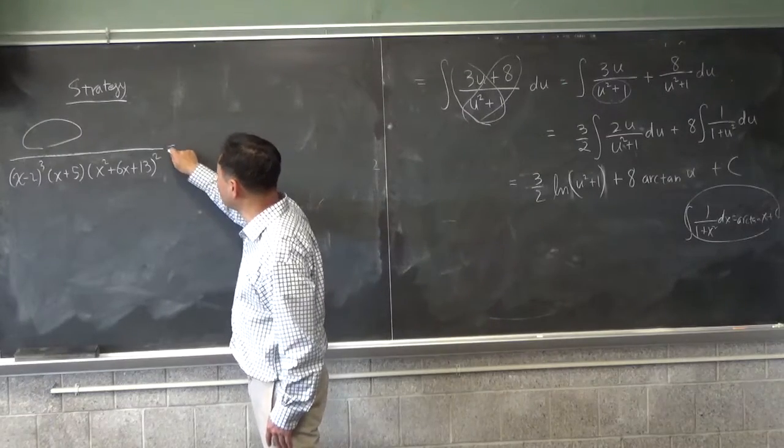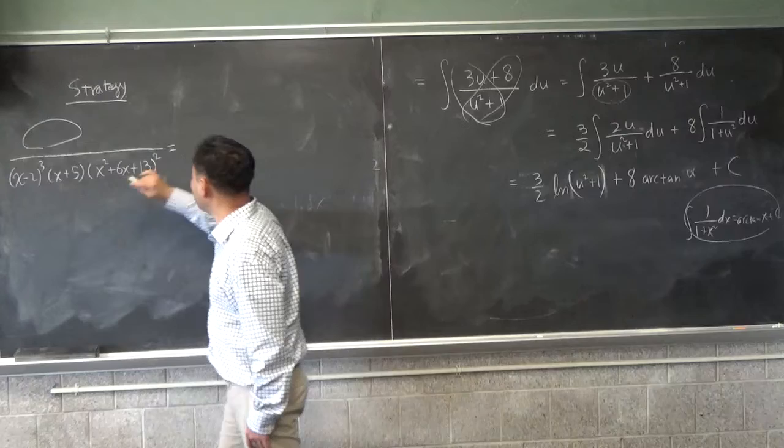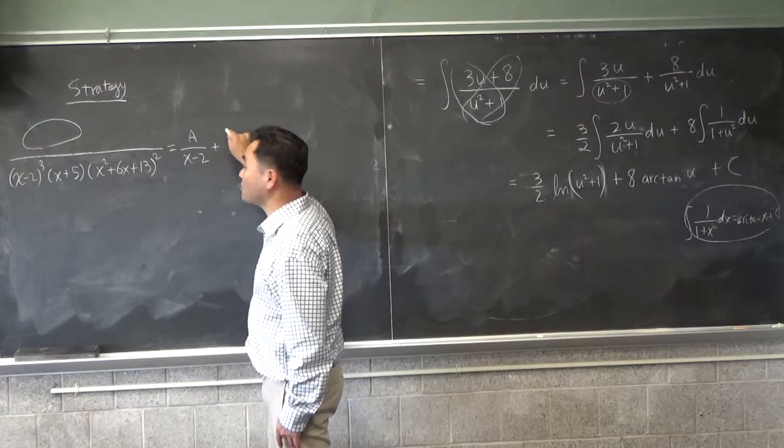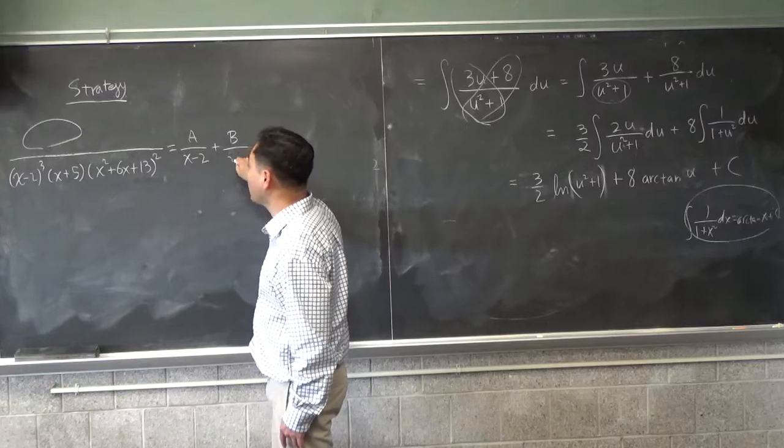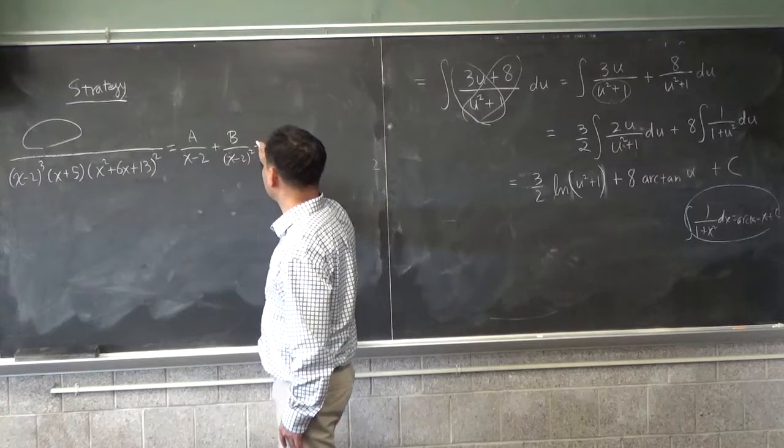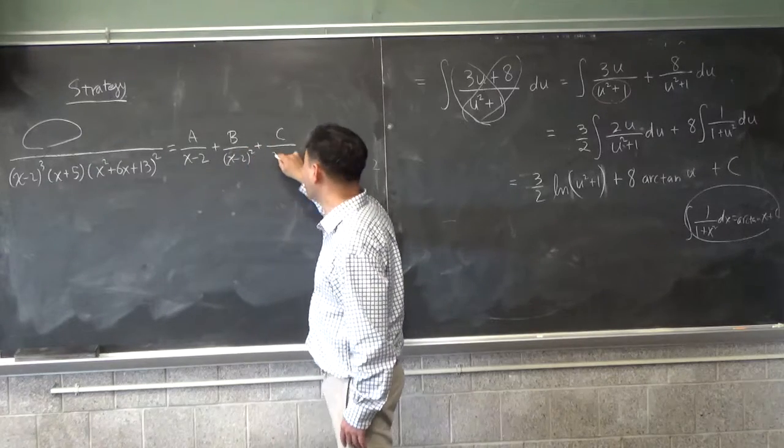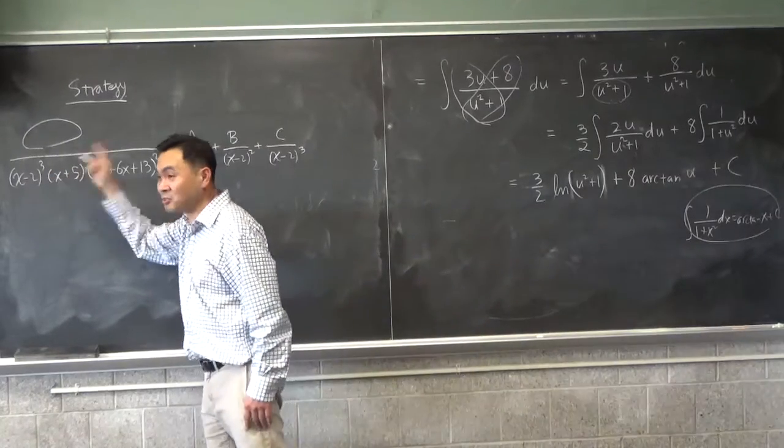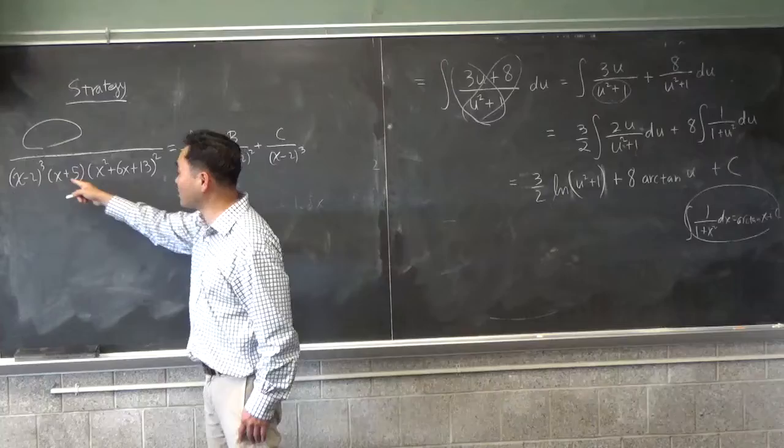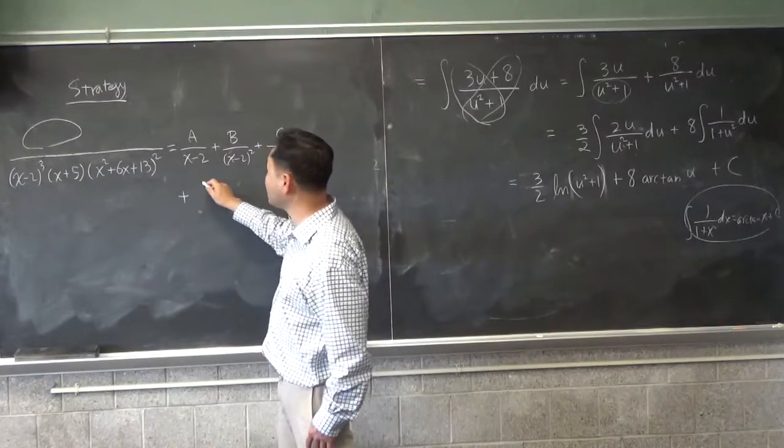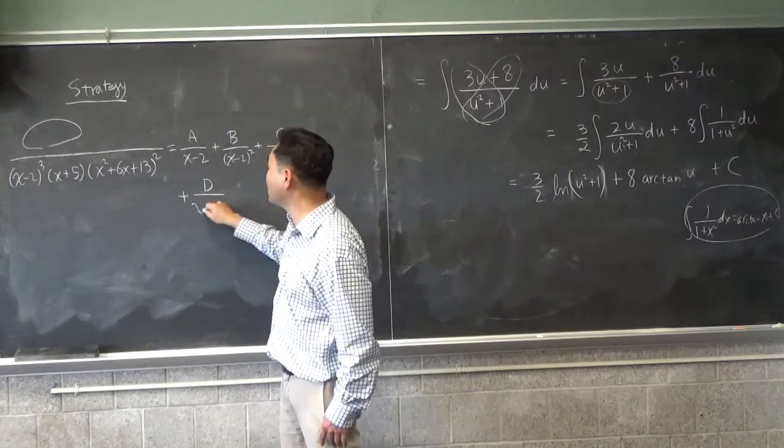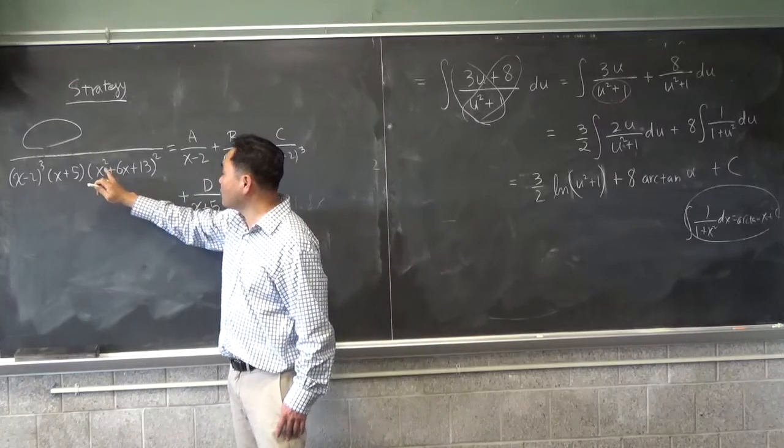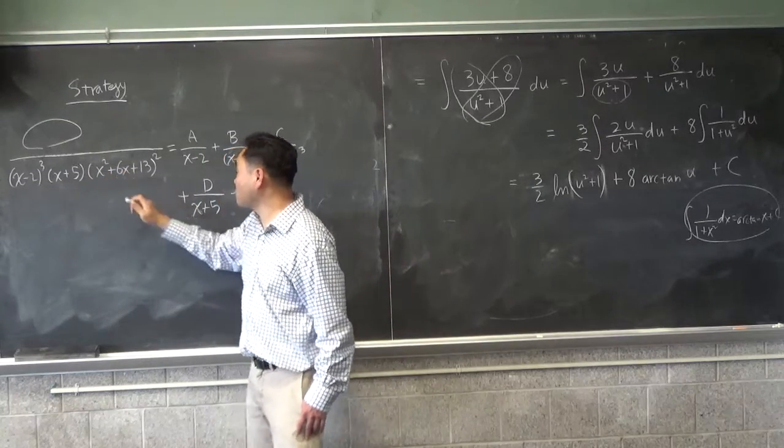And then let's say you have like x squared plus 6x plus 13. Let's put a square here. And this quadratic you can't factor. If you try to factor, you can't factor. Okay? In that case, what do we do? Well, here's how we do it. First, this cube would mean that you need a over x minus 2, b over x minus 2 squared plus c over x minus 2 cubed. And we're up to 3, so we stop there and then we move on to the next one. What do you write? D over x plus 5. And now is the next part.